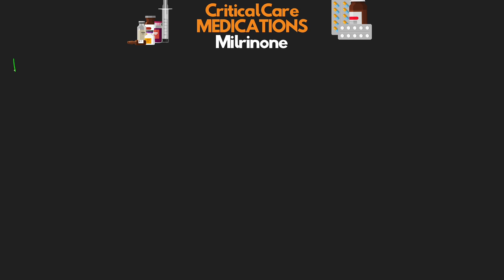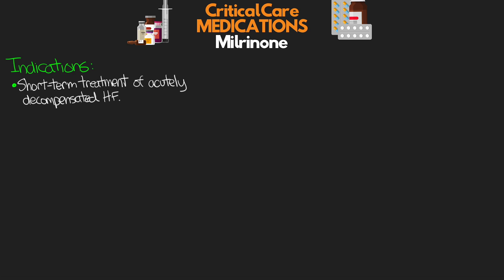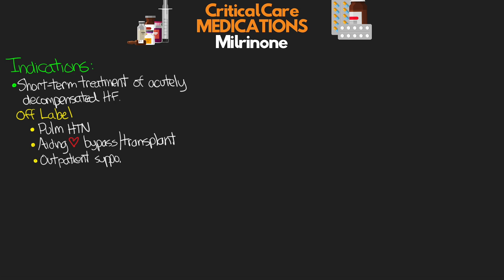So let's talk indications for Milrinone. Its main indication is for the short-term treatment of acutely decompensated heart failure. Off-label uses include pulmonary hypertension, aiding in cardiac bypass and transplantation when cardiac support is needed, as well as outpatient support of patients who have severe CHF symptoms with the goal of comfort or destination therapy.